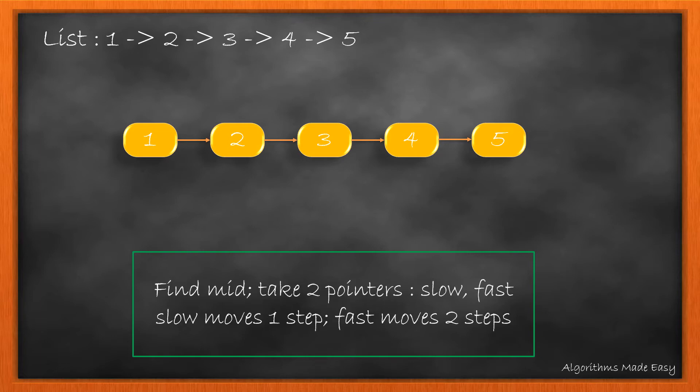To find the mid in a singly linked list, we take two pointers: slow and fast, where the slow pointer moves one step at a time and the fast pointer moves two steps at a time. Initially, both pointers are at the head. Then, till the fast or fast.next is not null, we move both slow and fast pointers.